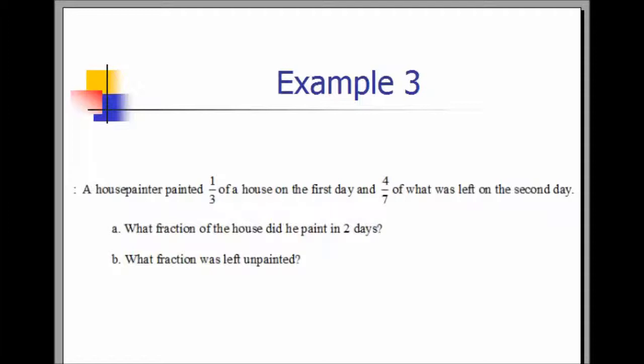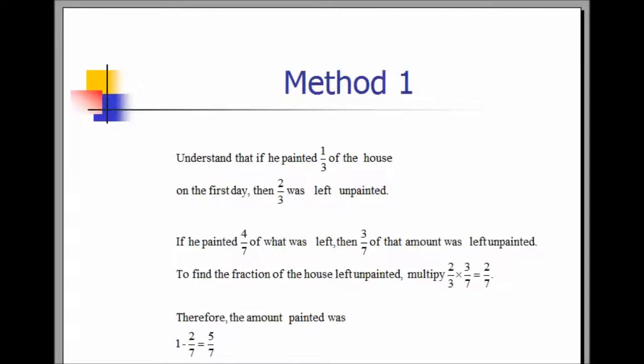Example 3. A house painter painted one-third of a house on the first day and four-sevenths of what was left on the second day. What fraction of the house did he paint in two days? What fraction was left unpainted? If he painted one-third of the house on the first day, then two-thirds was left. If he painted four-sevenths of what was left, then three-sevenths of the amount was left unpainted. To find the fraction of the house left unpainted, multiply two-thirds times three-sevenths, which is two-sevenths. Therefore, the amount painted was one minus two-sevenths, which was five-sevenths.